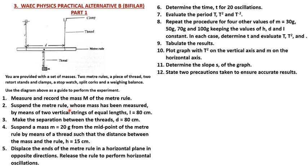Measure and record the mass M of the meter rule. Suspend the meter rule by means of two vertical strings of length L equals 80 cm. Make the separation between the threads D equals 80 cm, then suspend a mass m of 20 grams from the midpoint of the meter rule. The midpoint is determined by the knife edge, and the mass of the material can be determined using the weighing instrument — most materials have a mass around 120 grams. Suspend the mass m using a thread such that the distance between the mass and the rule is h equals 15 cm.